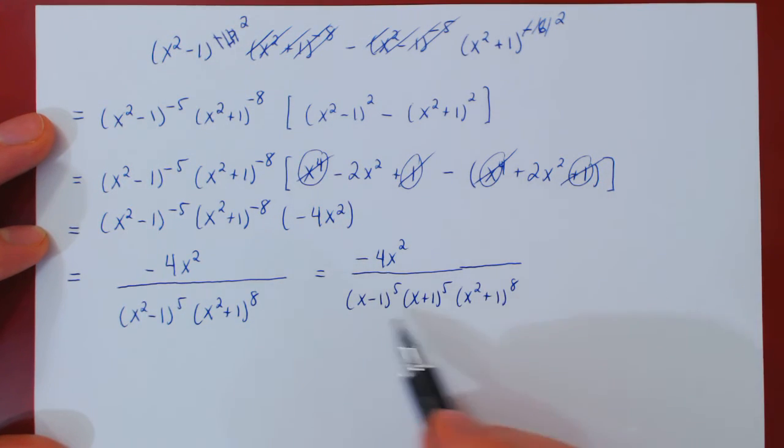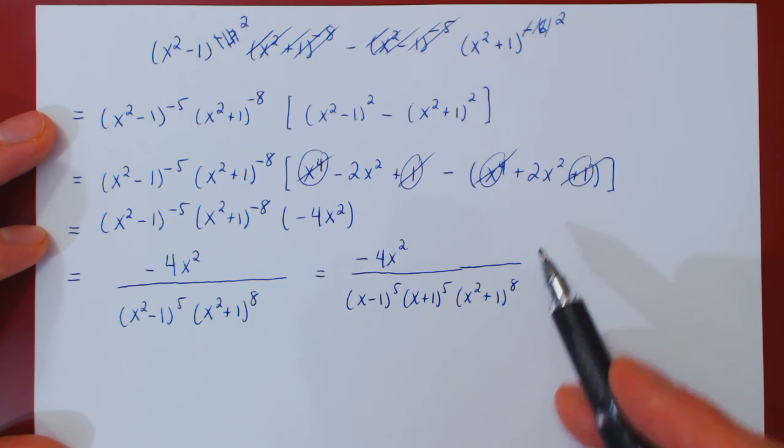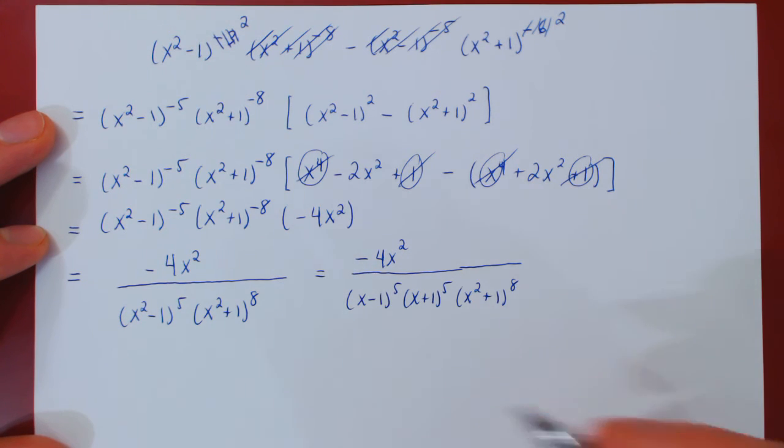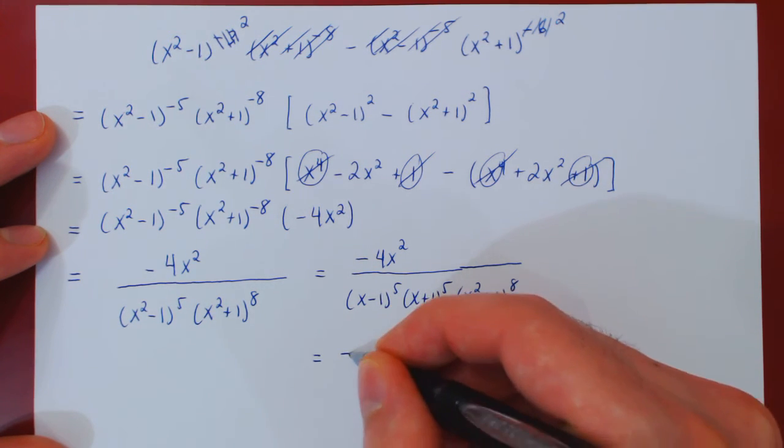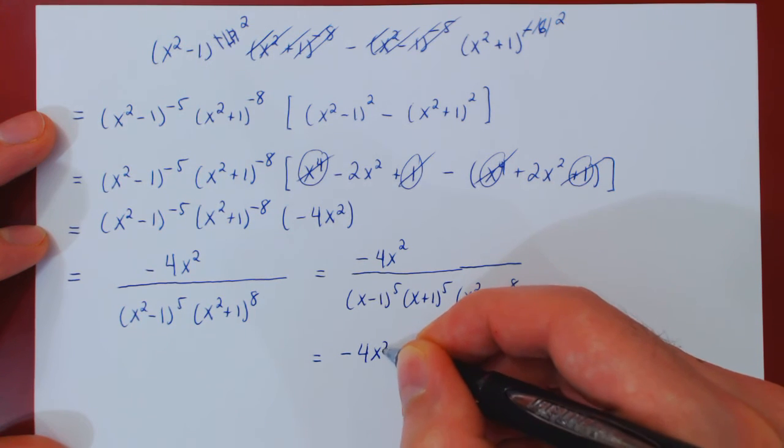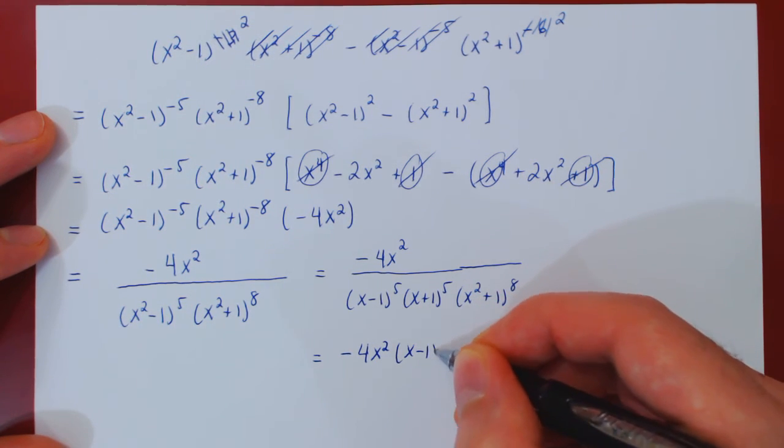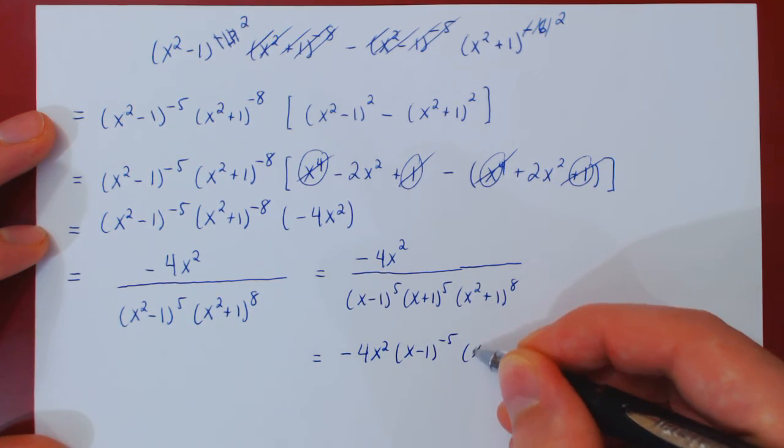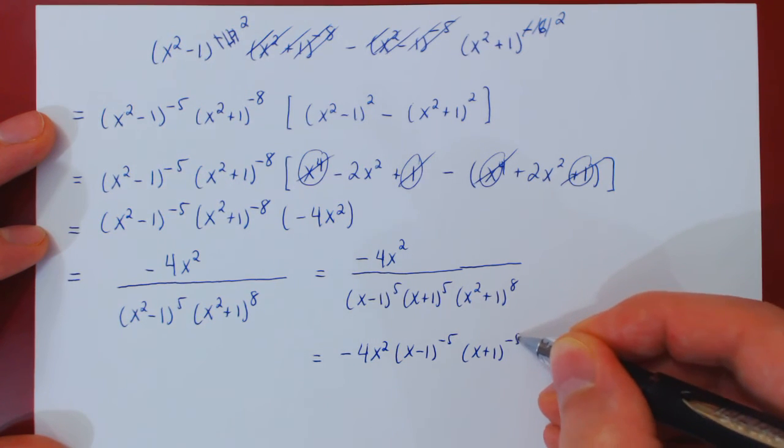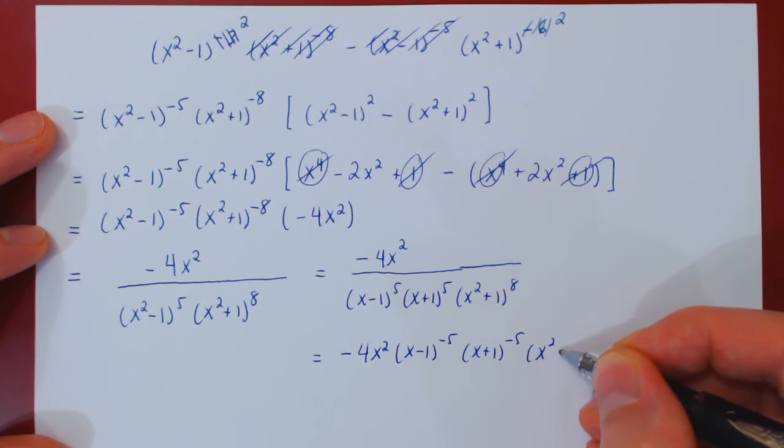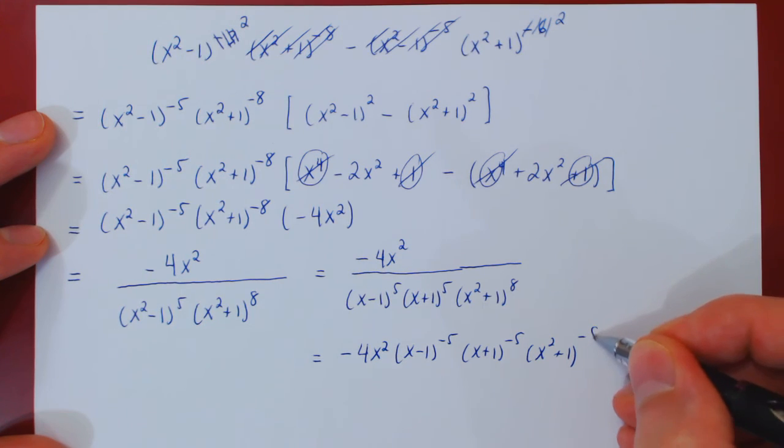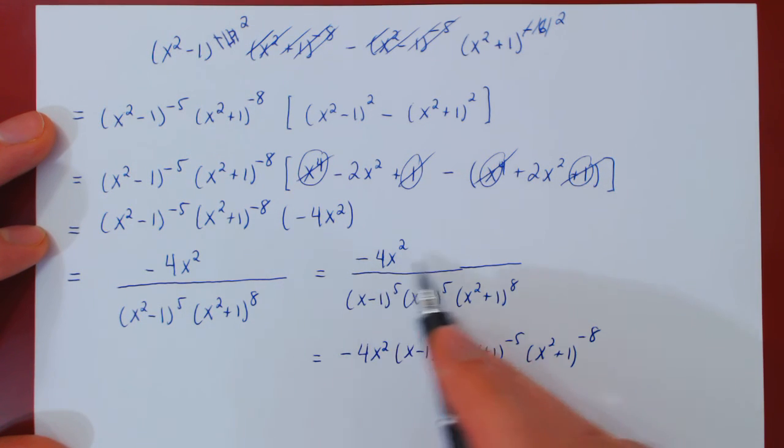And this completes our simplification and factorization. Now, you could have kept these terms on the numerator. So this would have also, in this form, would have been negative 4x squared, x minus 1 to the negative 5, x plus 1 to the negative 5, x squared plus 1 to the negative 8. So these are equivalent answers.